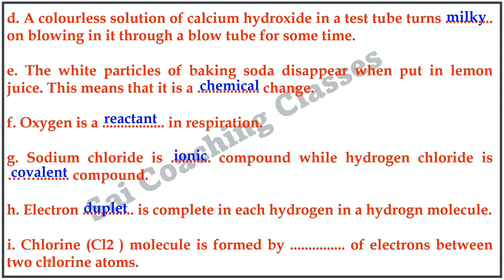I. Chlorine (Cl2) molecule is formed by dot dot of electrons between two chlorine atoms. Answer: Sharing.